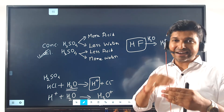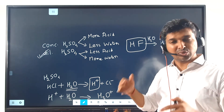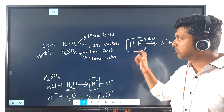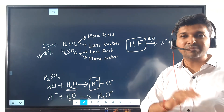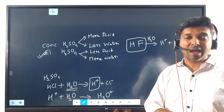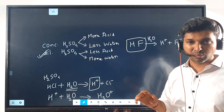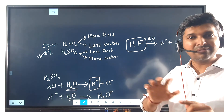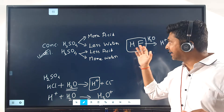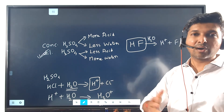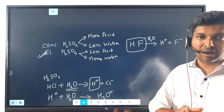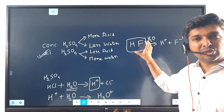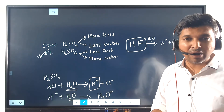HF is so corrosive that it even attacks glass, so you cannot store it in a glass bottle. Instead, it is stored in PTFE — polytetrafluoroethylene — coated plastic containers. Other mineral acids like concentrated HCl, concentrated H2SO4, and concentrated HNO3 can be stored in glass. However, concentrated HNO3 also attacks rubber, so rubber rings cannot be used for it either.